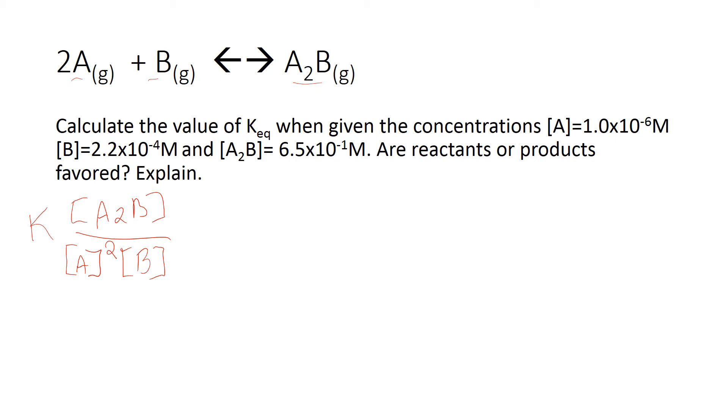It would never be 0. If there was no B, you wouldn't even write it in your equation. Now that I have my correct setup, the next step is to fill in the numbers I've been given. So A2B has a concentration of 6.5 times 10 to the negative 1, and I don't have to write M because those brackets mean concentration or molarity.